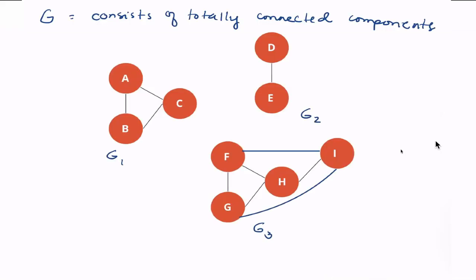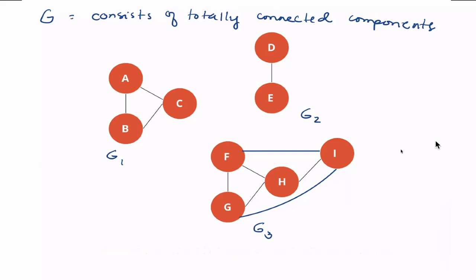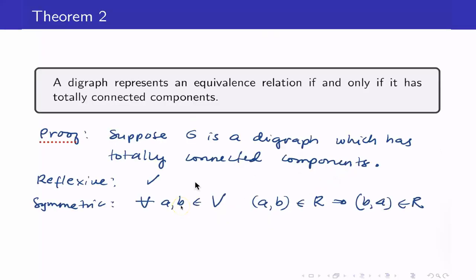Earlier, when we were determining whether a graph is an equivalence relation, we had to check all three properties: reflexive, symmetric, and transitive. However, this theorem tells us that just by checking if our graph has totally connected components, it will automatically be an equivalence relation. Going back to this example, it will be symmetric because the graphs here are undirected — if AB is an edge, then BA will also be an edge.